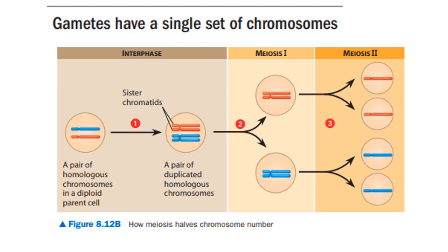The exceptions are the egg and sperm cells, collectively known as gametes. Each gamete has a single set of chromosomes — 23 autosomes plus a sex chromosome, either X or Y. A cell with a single chromosome set is called a haploid cell; it has only one member of each homologous pair. For humans, the haploid number is 23, that is N equals 23.